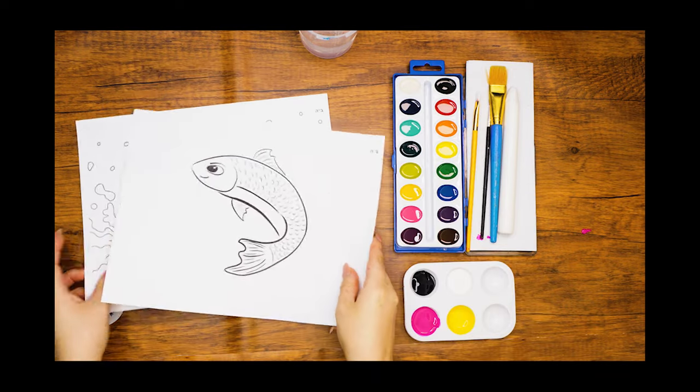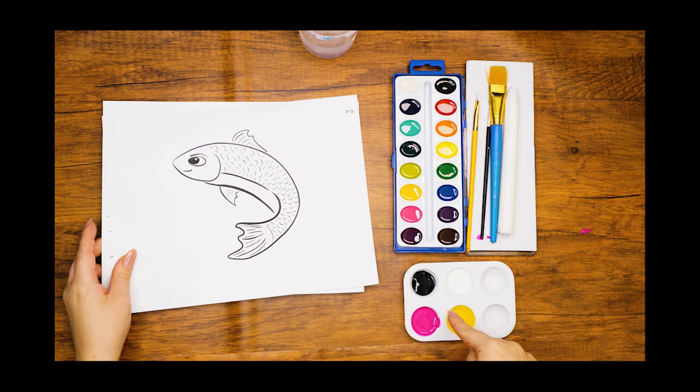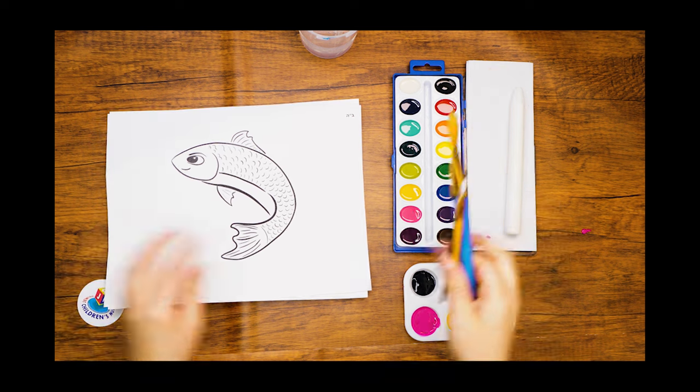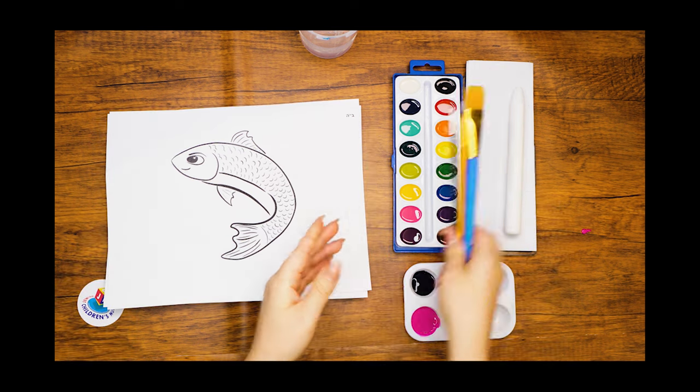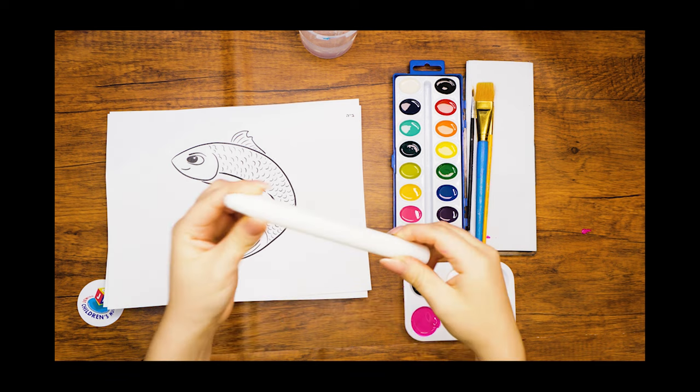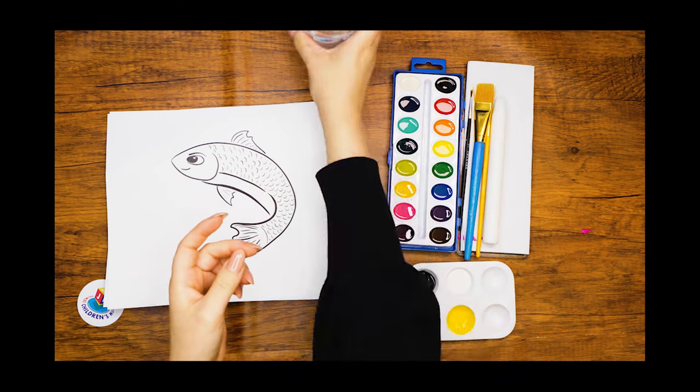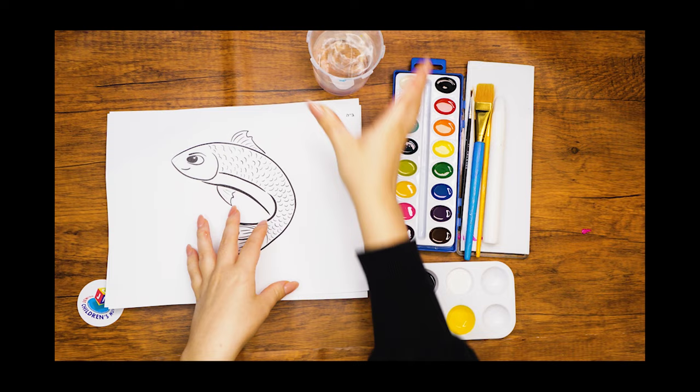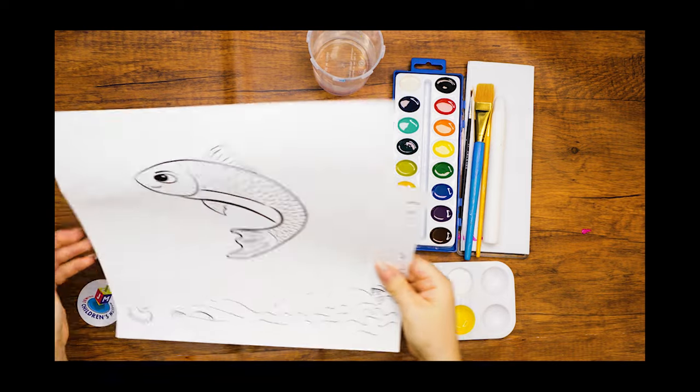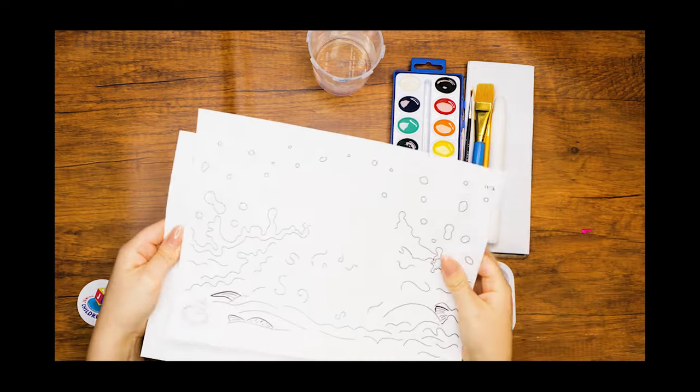These are the supplies that we'll need: watercolor paints, gouache or tempera paint in pink, yellow, and black, a thick paintbrush, a thin one, and a very thin one, a white candle or white crayon, a cup of water, and the templates printed on regular paper—one with the picture of a fish and the second with an image of water.